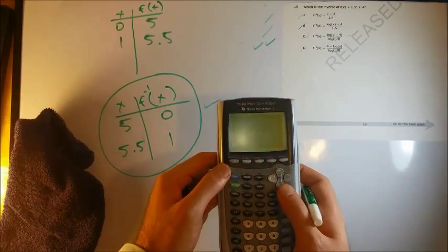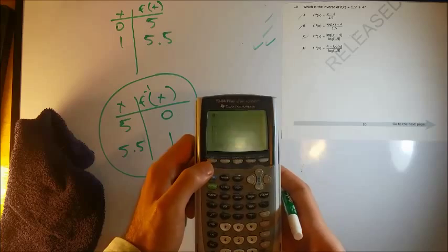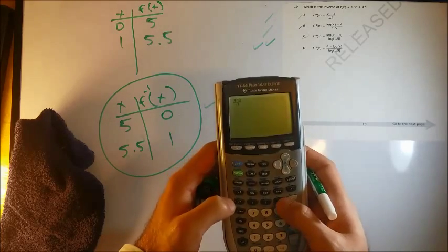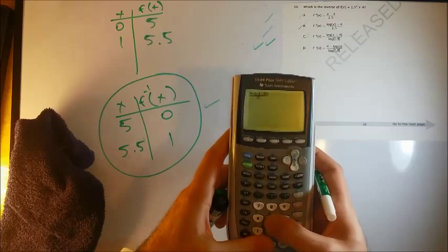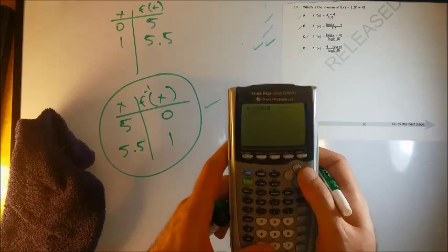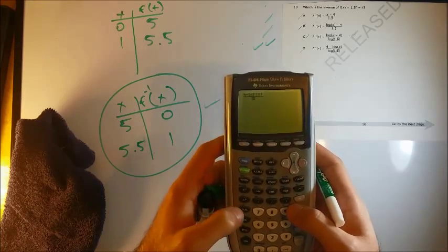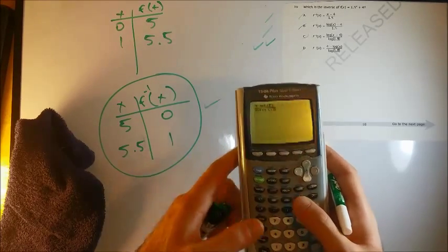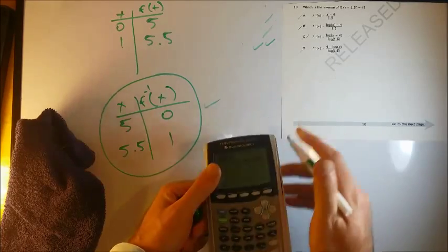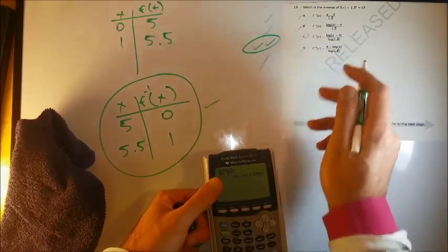This is just another way to check the answer. This one's good. Let's just make sure for D that that doesn't work, just to prove this. D, we have 4 minus log of 5 divided by log of 1.5. This should give us an output of 0, but it doesn't. So again, D does not work. So we're left with C.